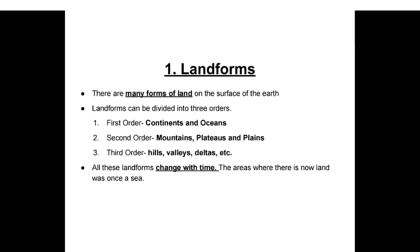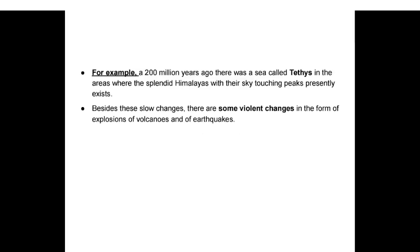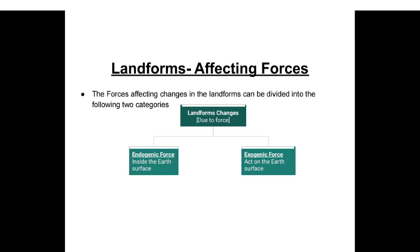Areas where there is land today once were sea. For example, 200 million years ago there was a sea called Tethys in the area where the Himalayas with their sky-touching peaks presently exist. Besides these slow changes, there are some violent changes in the form of volcanic explosions and earthquakes.